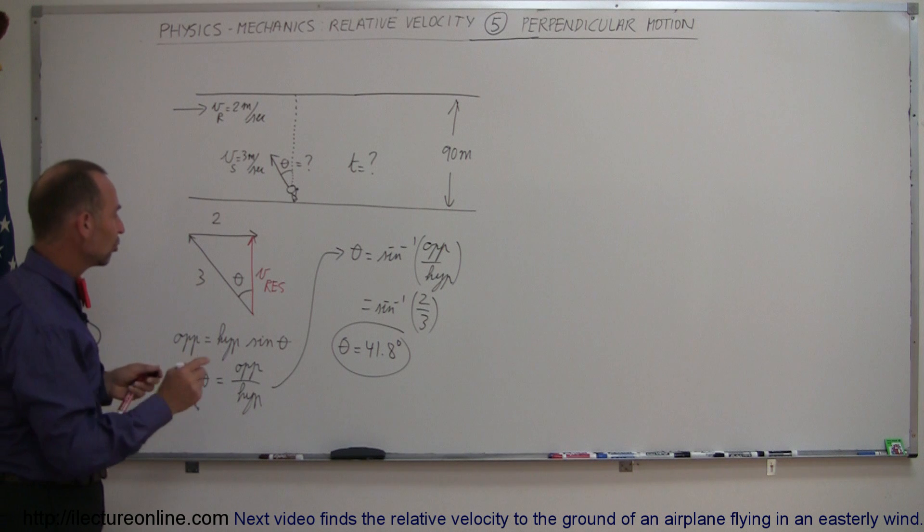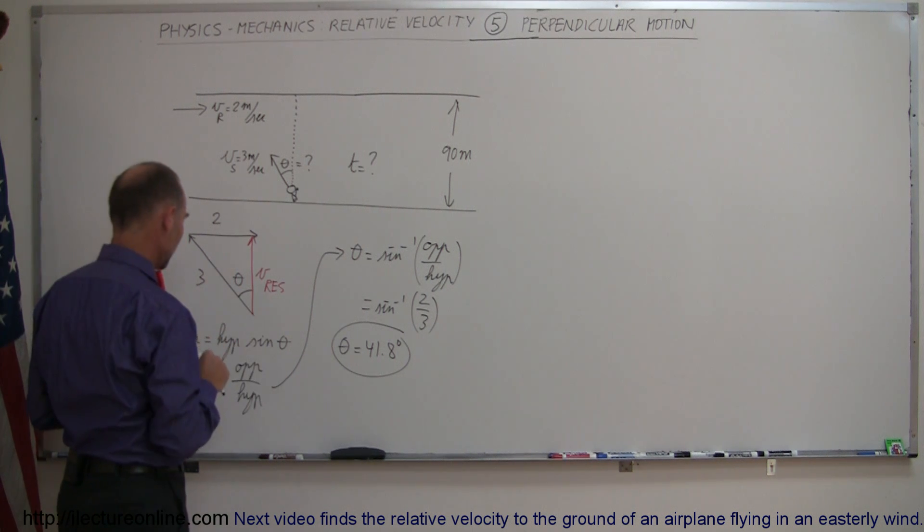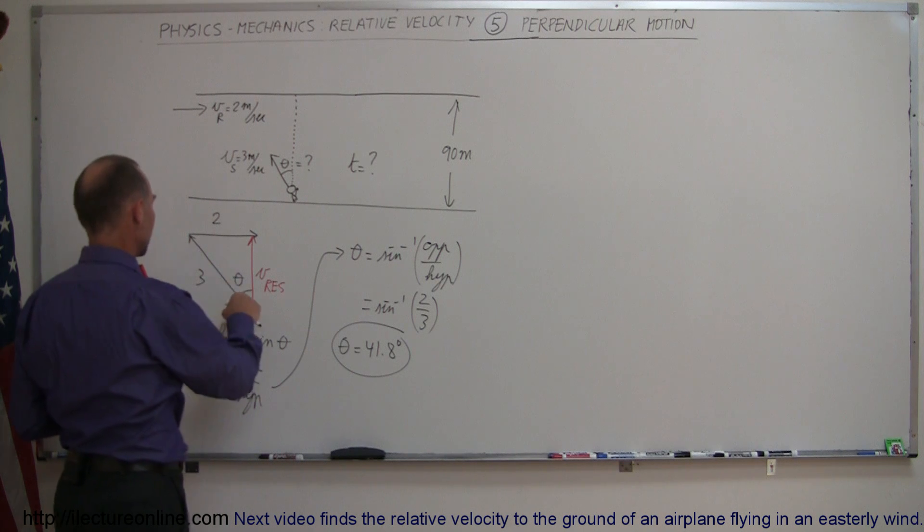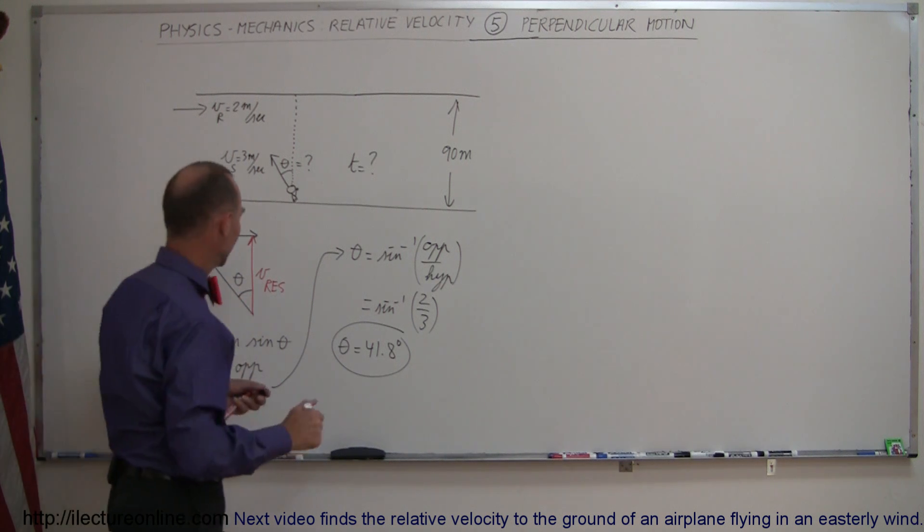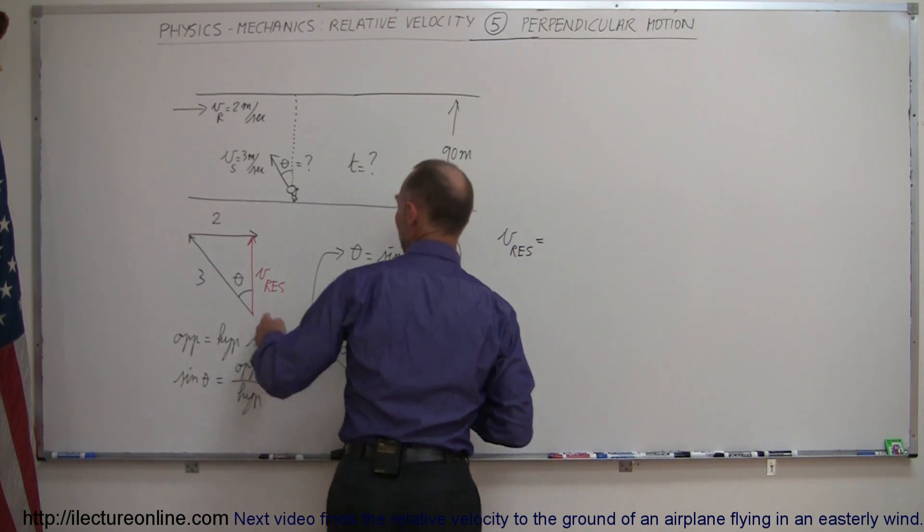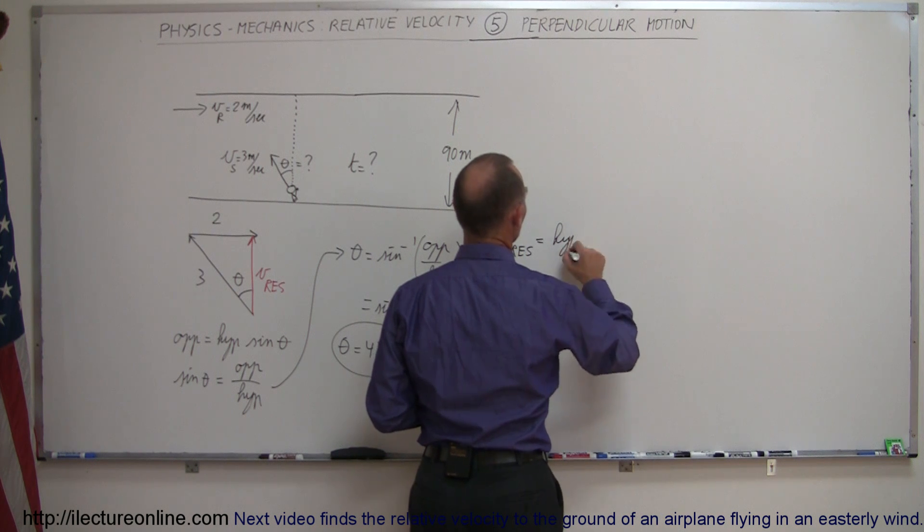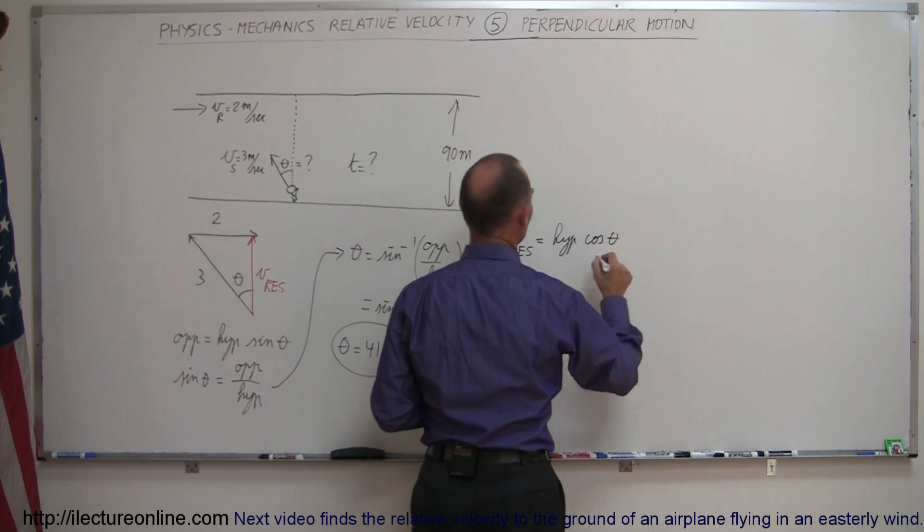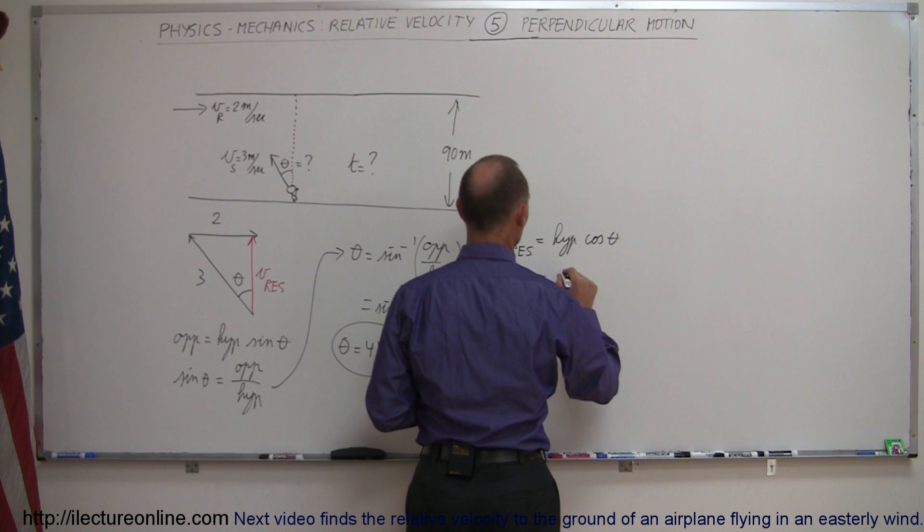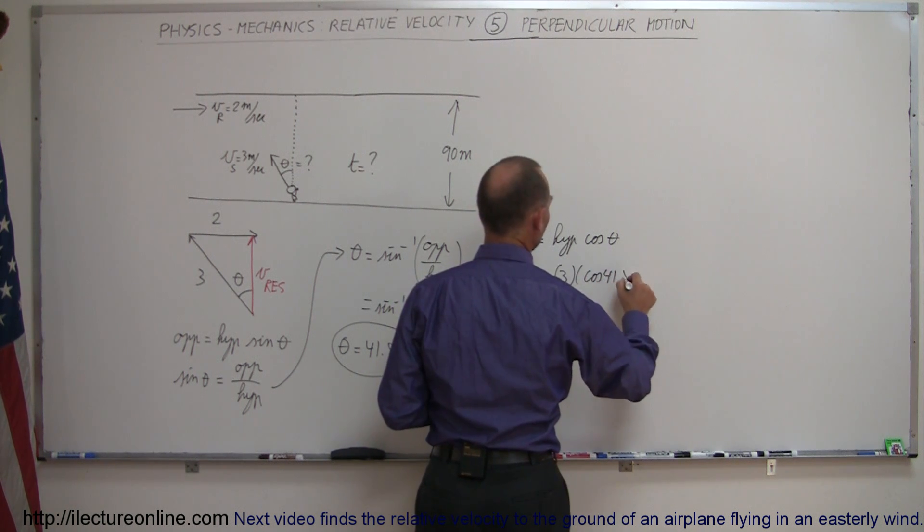Alright, knowing that, we should now be able to find the resultant velocity of the swimmer. Because we have the angle, we have the hypotenuse, so we can say that the resultant, the magnitude of that, which is the adjacent side of the angle, is equal to the hypotenuse times the cosine of the angle. The hypotenuse in this case is 3 and the cosine of 41.8 degrees.